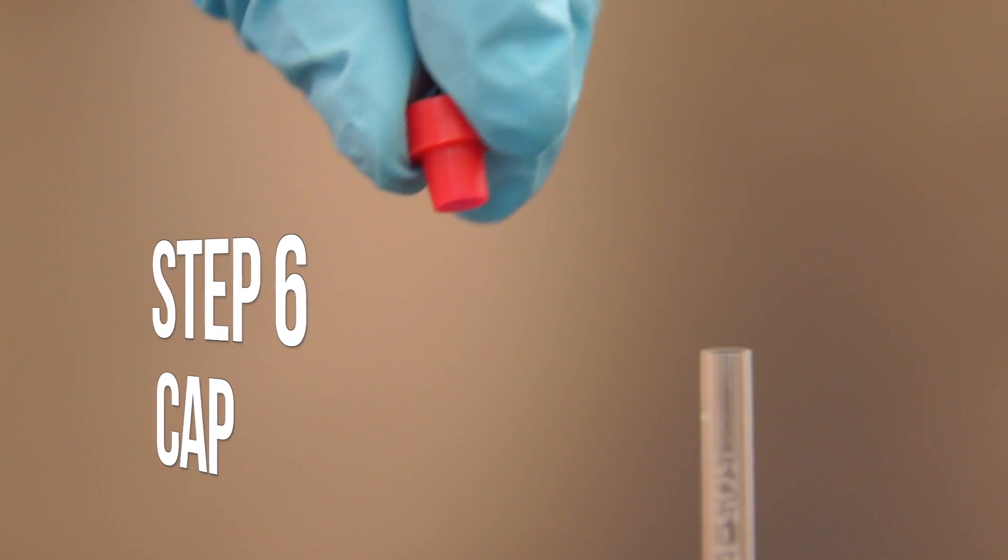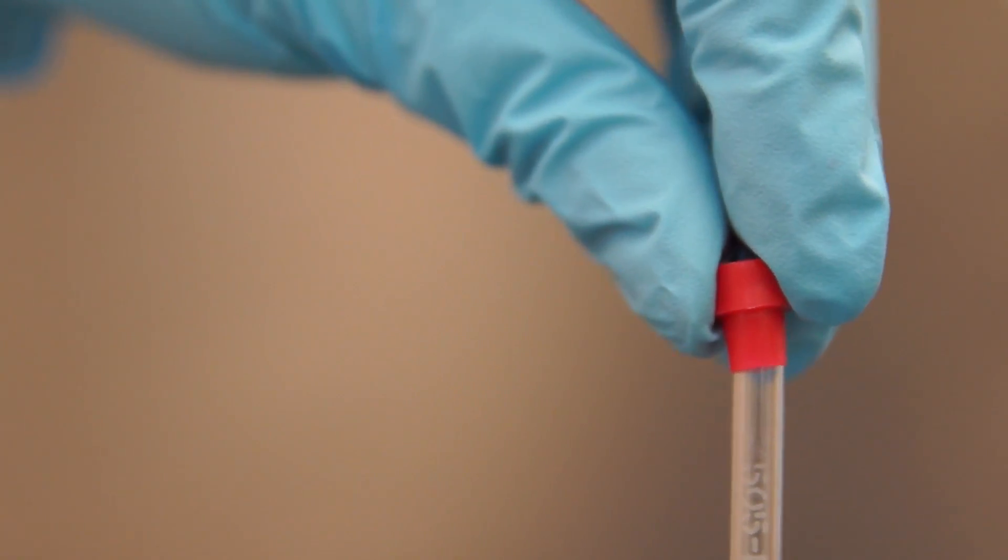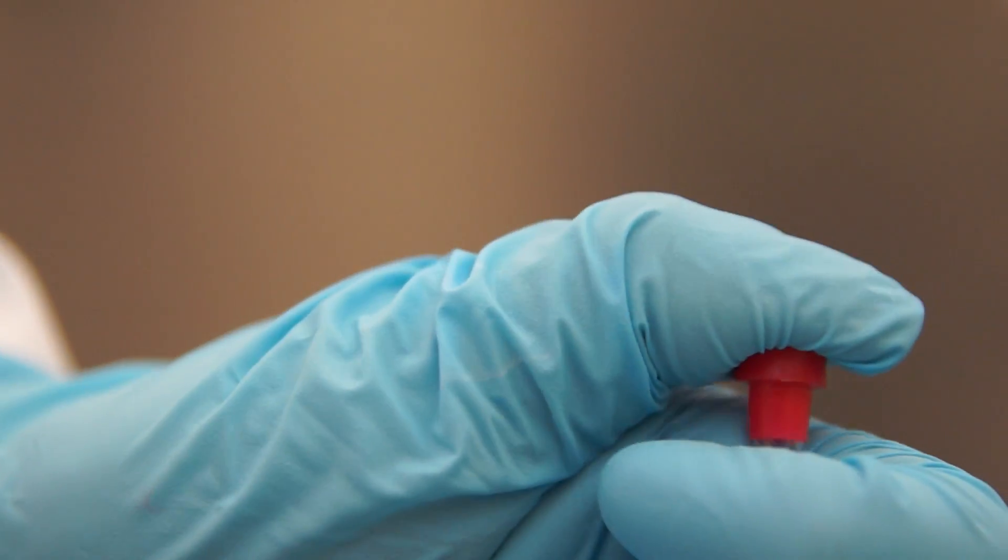Step six is to cap your sample. Make sure you put your cap on straight. If it's tilted a little bit, it will offset your sample reading in the NMR. Here's an example of a bad cap.